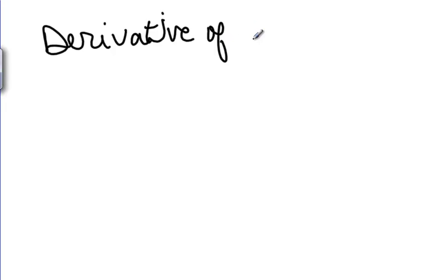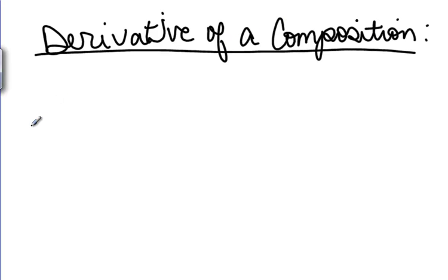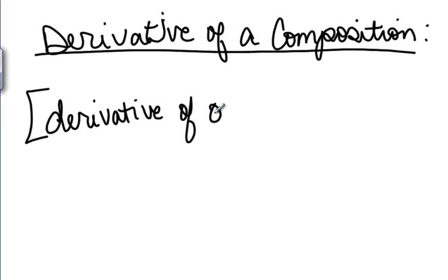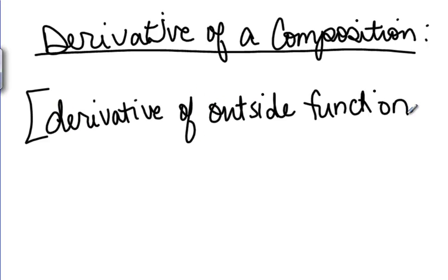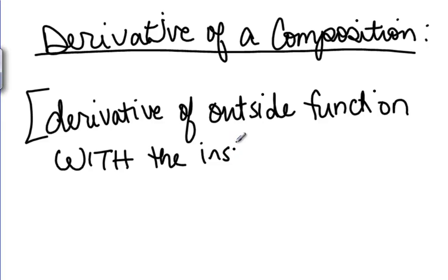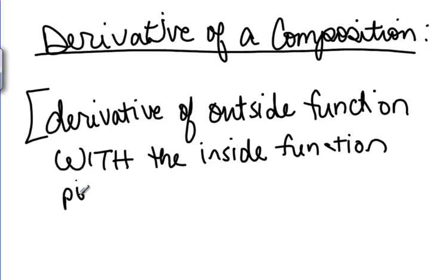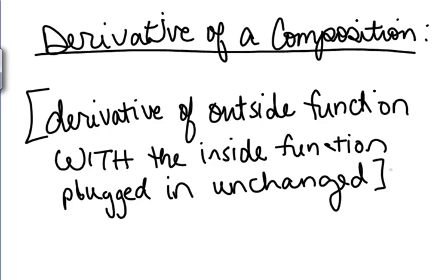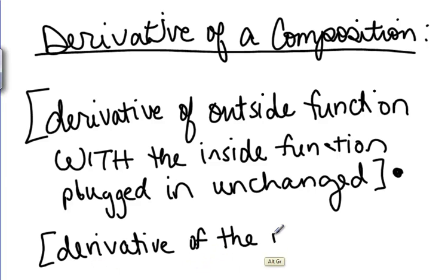Notice that what we've done is taken the derivative of a composition and gotten two terms. We get the derivative of the outside function with the inside function plugged in unchanged — that's the first term — and then that term multiplied by the derivative of the inside function.